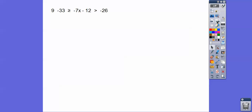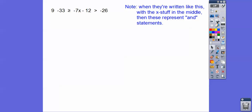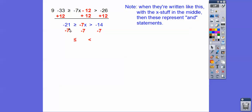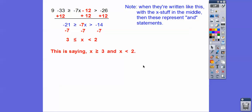Here's another AND graph — x in the middle means AND, so we look for intersection. Add 12 to everything: negative 33 plus 12 is negative 21, and negative 14 on the other side. Divide by negative 7, which flips the inequalities. This looks like it's shaded between 2 and 3, but written as AND it says x greater than or equal to 3 AND x less than 2. Since 3 is to the right and less-than-2 goes left, they don't intersect — so it's no solution.